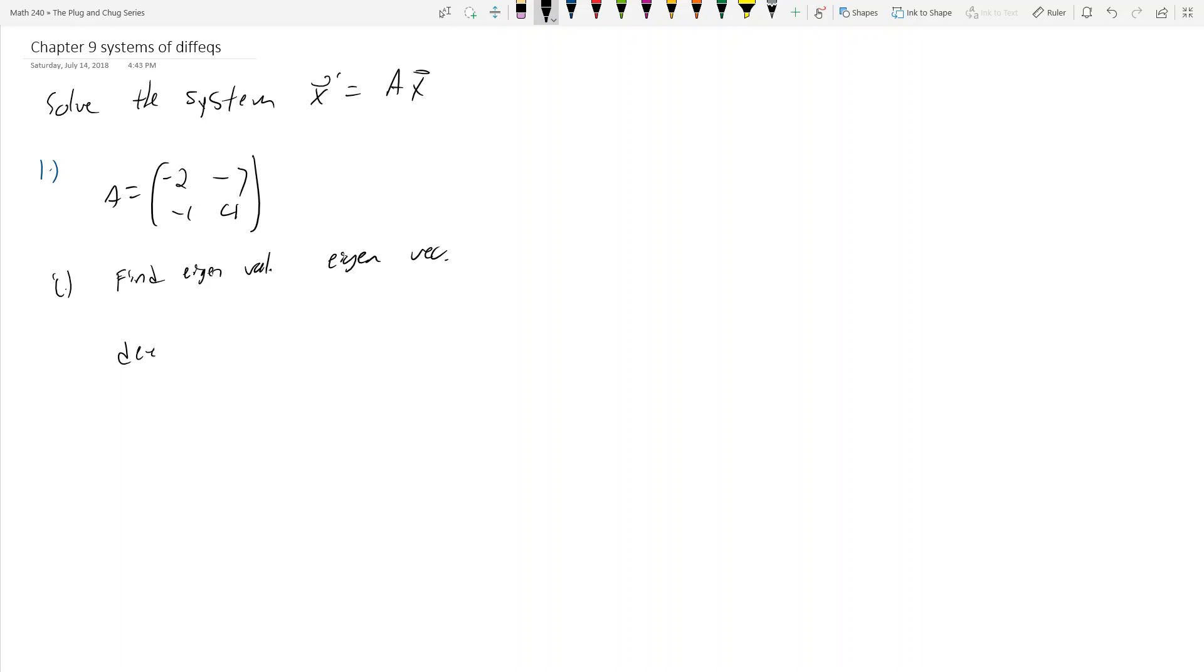So the determinant of A minus λI—I'm assuming you guys know how to do this—is det([-2-λ, -7; -1, 4-λ]). This becomes λ² - 2λ - 15, which factors as (λ-5)(λ+3). So my eigenvalues are λ = -3 and λ = 5.